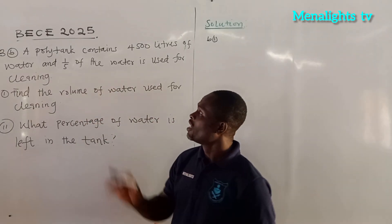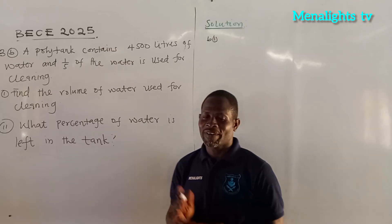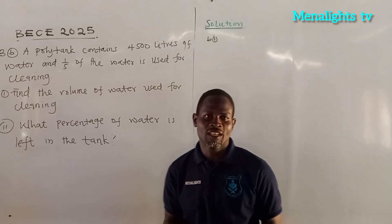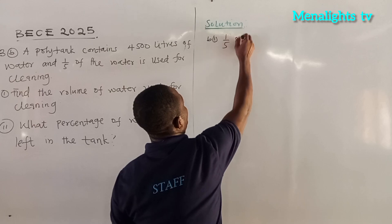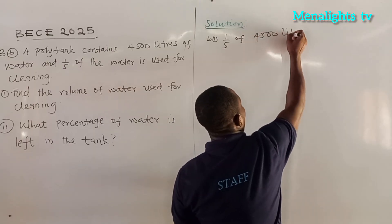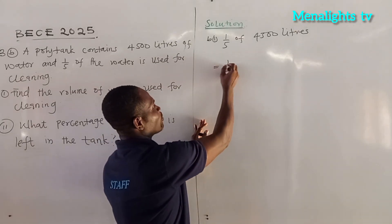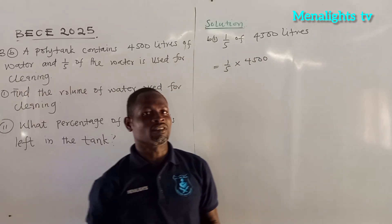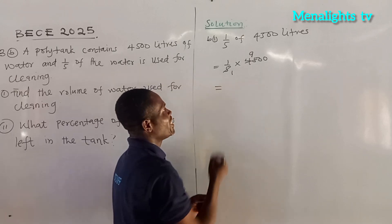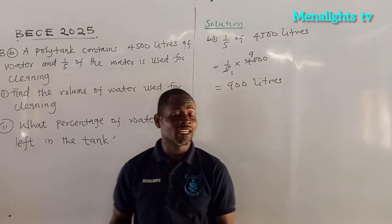Now we come to question 3b. A tank contains 4,500 liters of water and one-fifth of the water is used for cleaning. The first question is to find the volume of water used for cleaning. The water used for cleaning is one-fifth of the 4,500 liters in the tank. So that is 1 over 5 times 4,500, and 5 goes into 45 nine times. So 900 liters of water was used for cleaning.